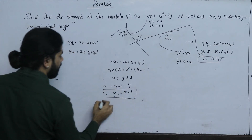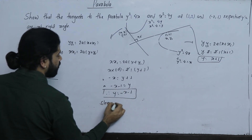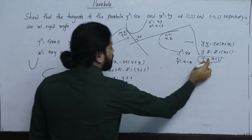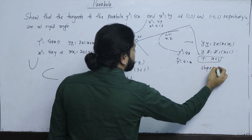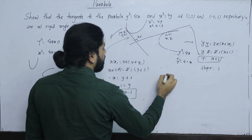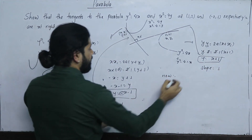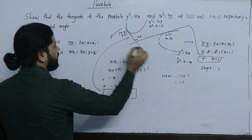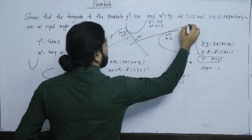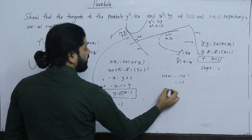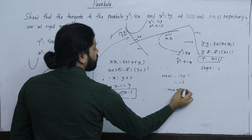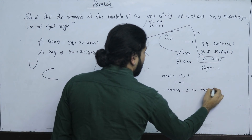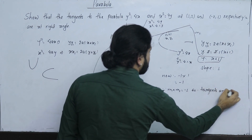The slope of y = x + 1 is m1 = 1. The slope of y = -x - 1 is m2 = -1. Since m1 × m2 = 1 × (-1) = -1, the two tangents are perpendicular, i.e., at right angles to each other.